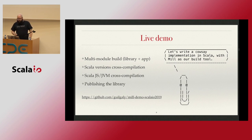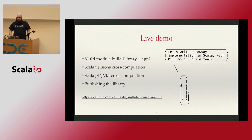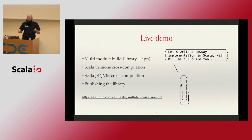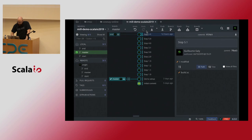The meat of this talk is a demo. What are we going to do? We're going to write a Cowsay implementation in Scala and use Mill as the build tool. If you've never used Cowsay, it's a little command-line tool — you give it some text and it outputs a cow saying that text. The original implementation is in Perl; this is just a re-implementation. The idea is to have a multi-module build, add cross-compilation for different Scala versions, Scala.js and Scala JVM, and maybe even publish the library at the end. For timing reasons, I'm going to cheat a little — I won't write all the code from scratch.